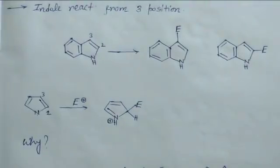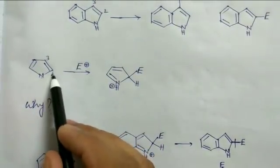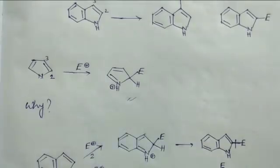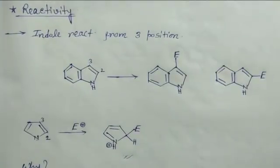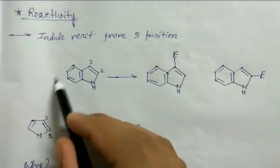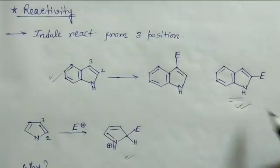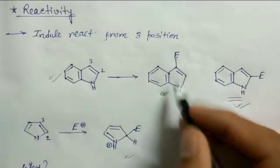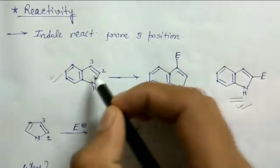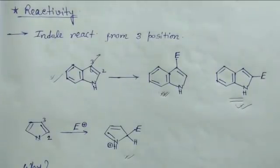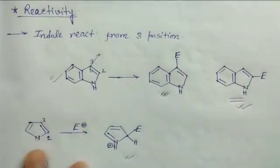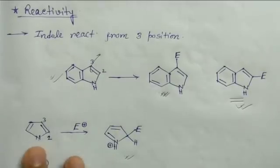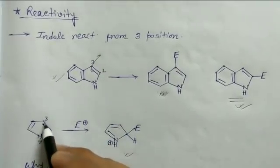The reactions of indole and quinoline follow the same patterns as pyrrole and pyridine respectively. Recalling the reactivity of pyrrole: pyrrole is a very good substrate for electrophilic aromatic substitution because it is electron-rich, and it reacts at the 2 and 5 positions. Applying the same logic to indole, we might expect a 2-substituted product, but in fact we get the 3-substituted product — the reaction takes place at the 3-position.